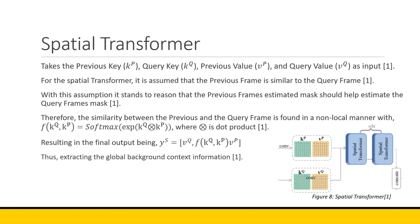The spatial transformer is a lot simpler. It takes in the same type of input except instead of all frames stored in the memory buffer, it only takes in the previous frame — the previous key, query key, previous value, and query value. For the spatial transformer, we assume the previous frame is similar to the query frame. With this assumption, we use the previous frame to estimate what the current frame's mask should look like. We look for similarity using a similar expression: finding the dot product of K_Q and K_D, taking the exponent, then a softmax. This results in a final output YS, which combined with YT is sent to the decoder to predict the mask.